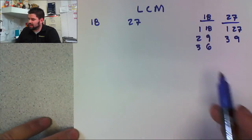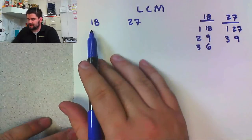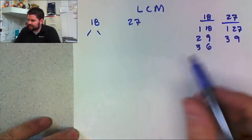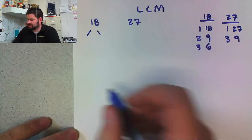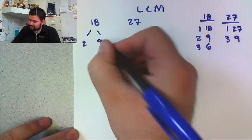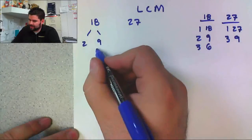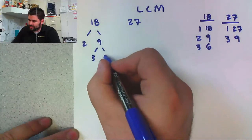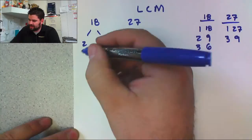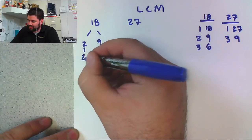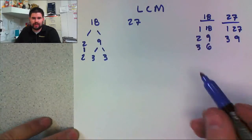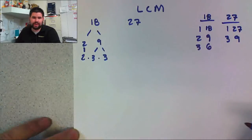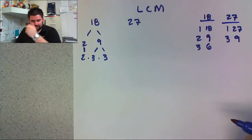I got my factors, and now I'm going to prime factor 18. For this case, I'm going to choose 2 and 9, and I'm going to continue on factoring 9 — I get 3 and 3. And 2 is already a prime number, so I'm just going to bring that down. This is my prime factorization for 18.